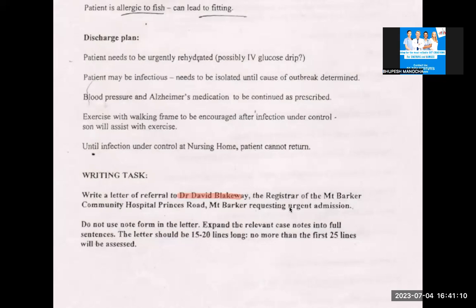I'm writing the letter to the registrar at the Mount Barker Community Hospital, Princess Road, Mount Barker, requesting urgent admission. That means I want an urgent admission for a person in the Mount Barker Community Hospital. There should be a comma after 'Hospital' which is missing. They are talking about a hospital which is on Princess Road.